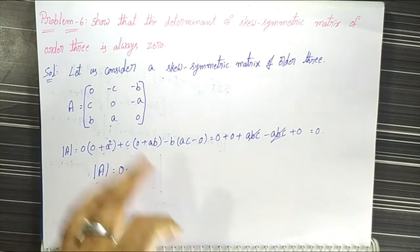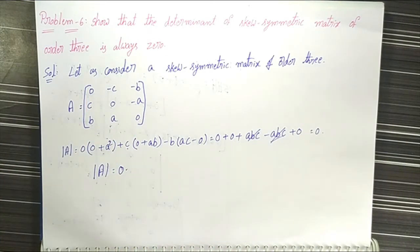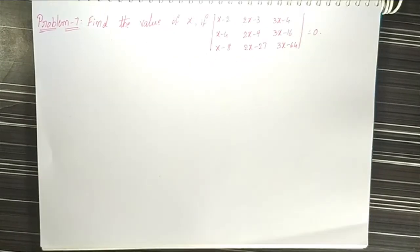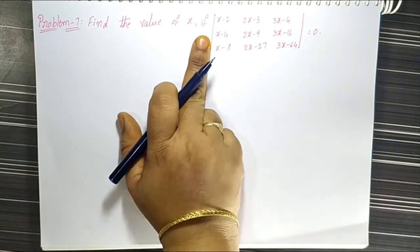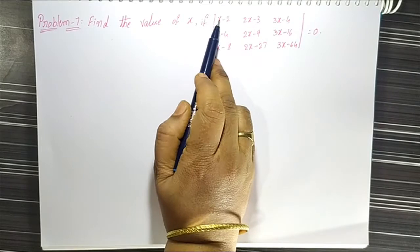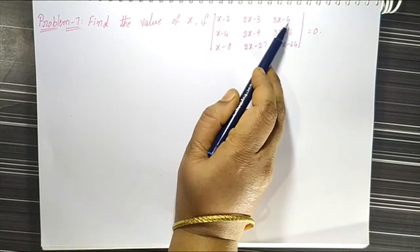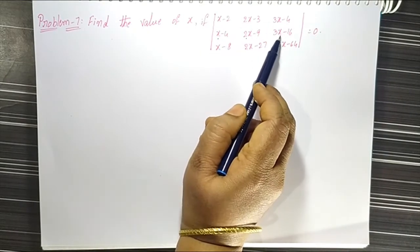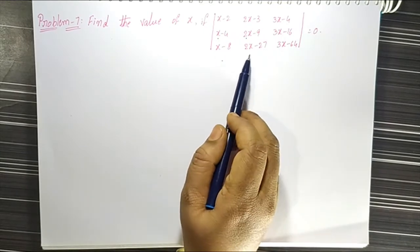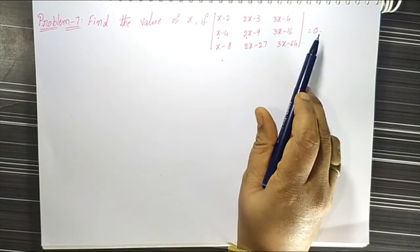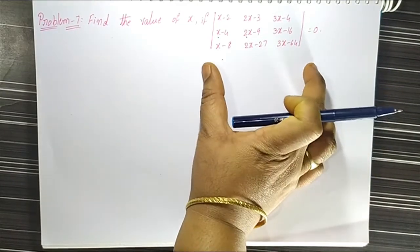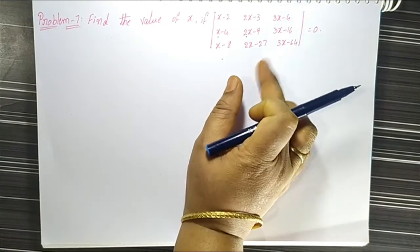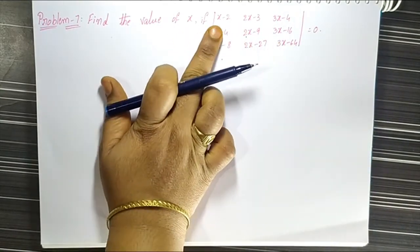Next we have to solve problem number 7 in the same solved problems 3.4.10. The problem is: find the value of x if the determinant of the matrix with entries x-2, 2x-3, 3x-4; x-4, 2x-9, 3x-16; x-8, 2x-27, 3x-64 is equal to zero.